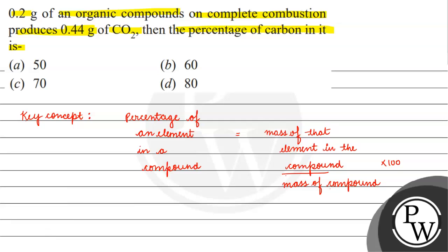Now, what is given? 0.2 gram of organic compound on combustion produces 0.44 gram of carbon dioxide.